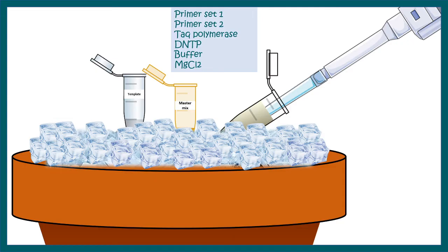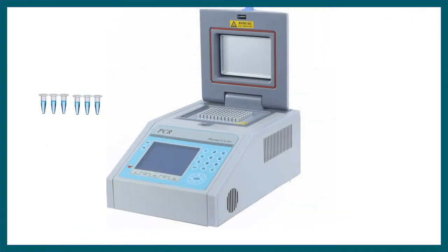But in this particular nested PCR reaction, there are two primer sets. That means, in total, there would be two forward primers and two reverse primers. And that has something to do with the specificity. Let me explain how.